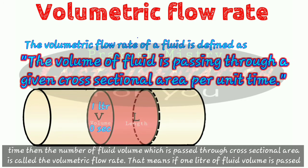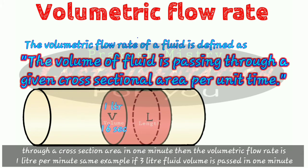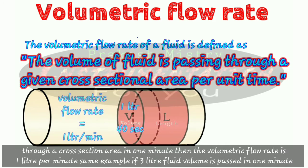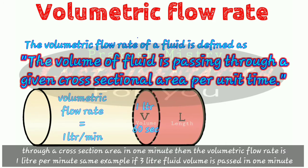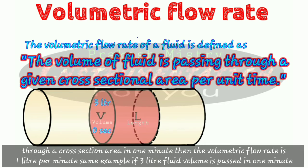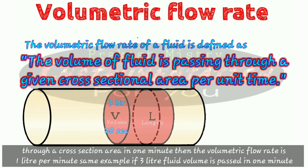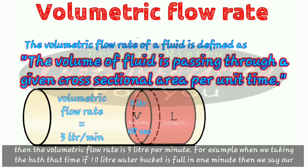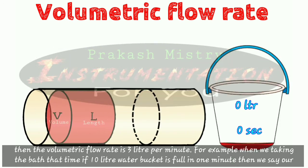That means if one liter of fluid volume is passed through a cross section area in one minute, then the volumetric flow rate is one liter per minute. Similarly, if three liters of fluid volume is passed in one minute, then the volumetric flow rate is three liters per minute.